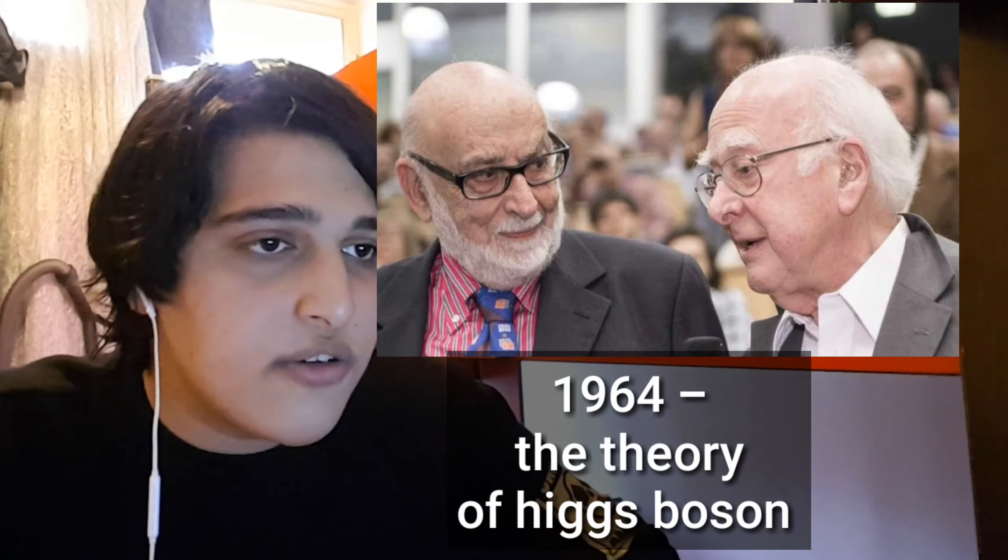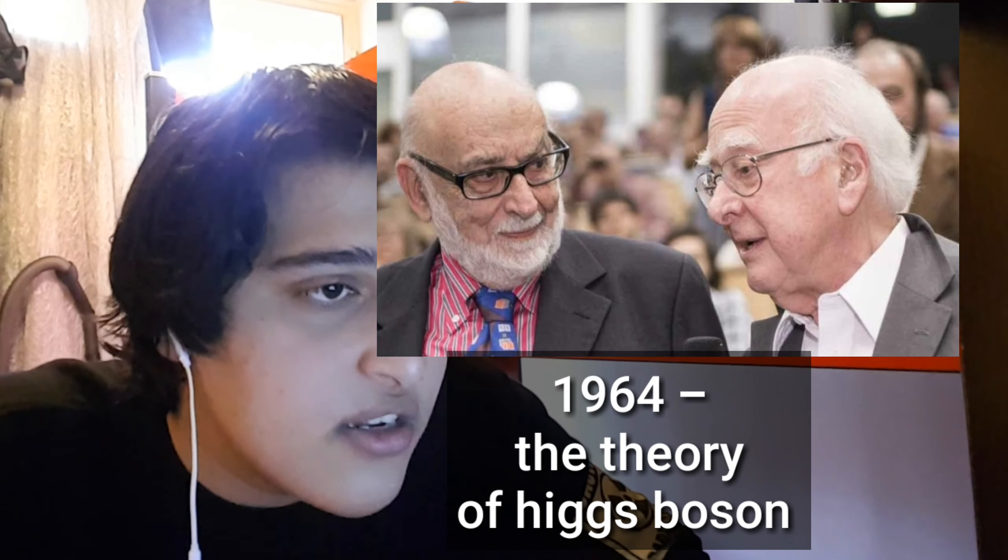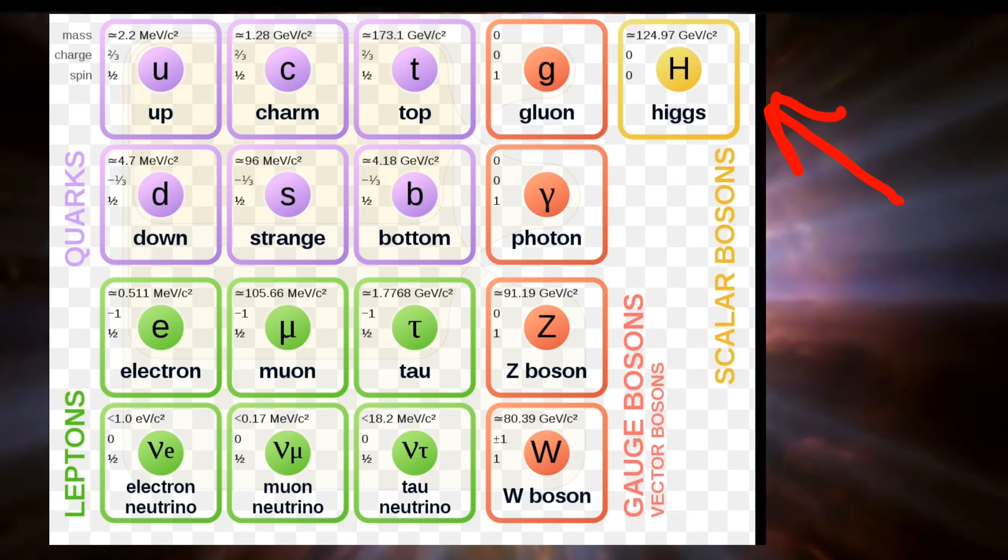It's very awesome for Peter Higgs and François Englert to predict something great like this 84 years ago. This actually proved the correctness of their mathematical operations and equations. And this is the story that tells how the Higgs boson became part of the standard model table.